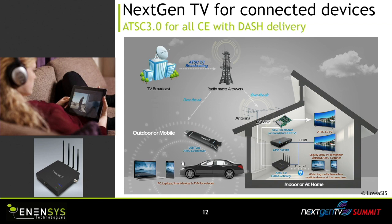At home, you have a home gateway that receives ATSC 3 over the air and puts the DASH content using Wi-Fi or Ethernet to different OTT players which could be any device. In the car, you could have an ATSC 3 receiver and a small Wi-Fi inside the car, and every device connected to that Wi-Fi will be able to read the ATSC 3 content — even if it's only an OTT player, not a native ATSC 3 player.